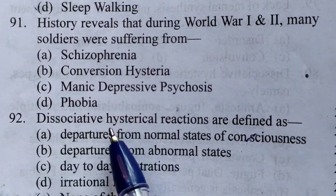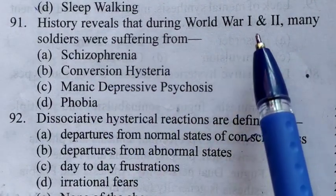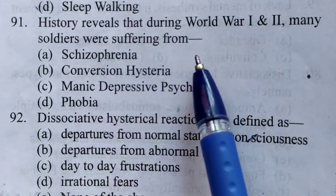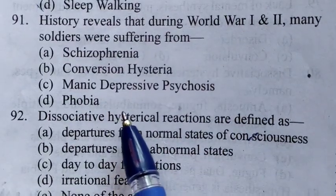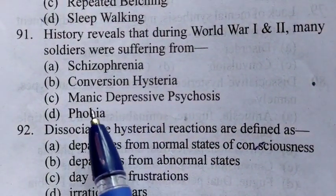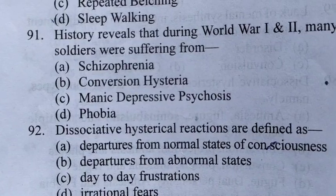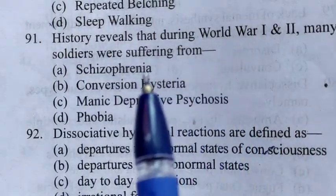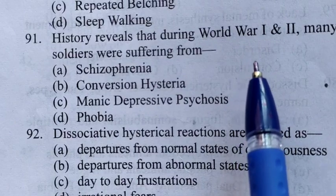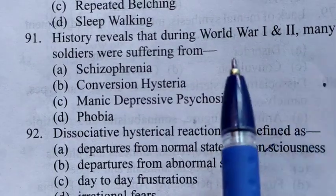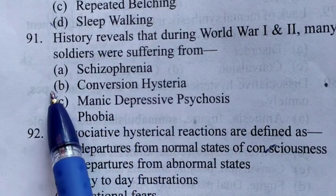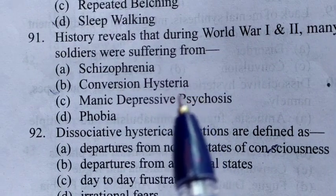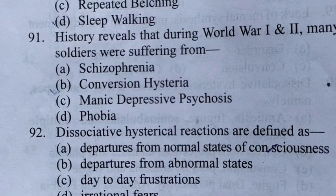91st question: History reveals that during World War I and World War II, many soldiers were suffering from — dekhiye jab wars hote hain toh ek dar sab ke mann mein baith jaata hai, problems create hoti hain, aas paas maar-kaat aisi cheezein hoti hain. Toh itihasik survey yeh batata tha ki World War I aur World War II jab hue the, toh un soldiers mein, jo sainik the, unme sabse zyada problem dekhi gayi conversion hysteria ki — sensory, motory, aur psychological — jo thinking waali problems hain — woh unme dekhi gayi, conversion hysteria ki problem.